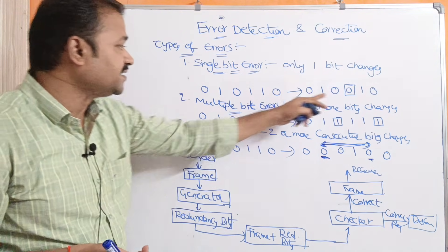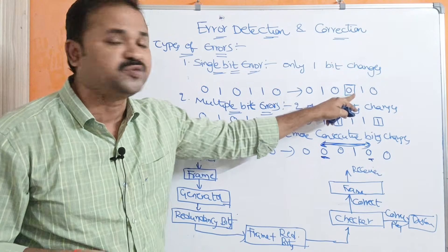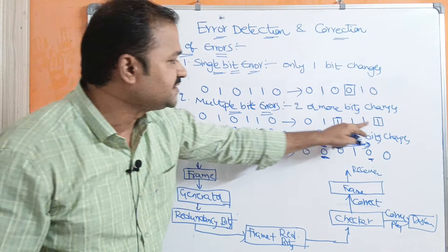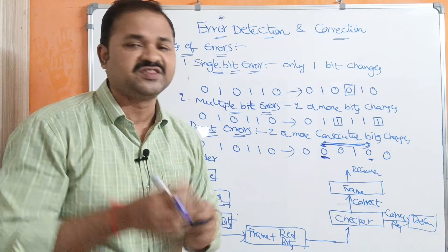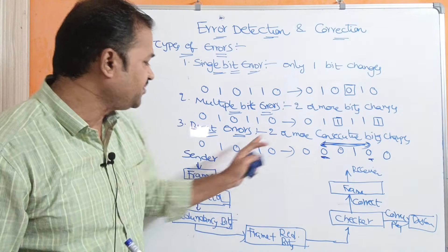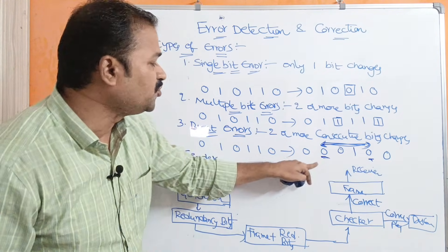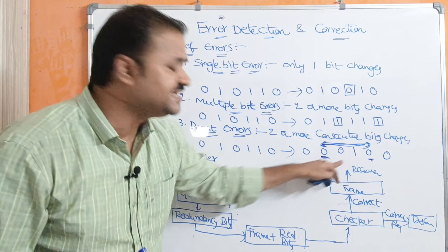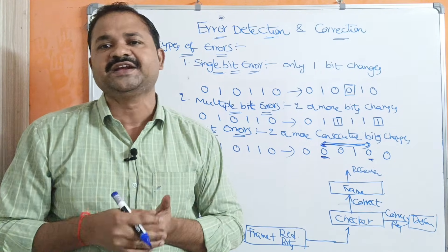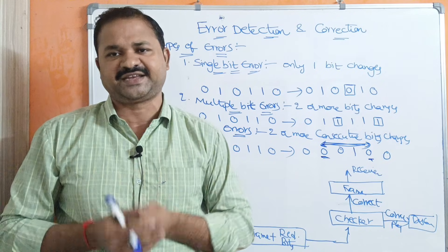For example, observing the single bit error example: in the 4th position we got the error. In the multiple bit error example: in the 3rd position and 7th position we got the error. In the burst error example, there are errors in multiple positions. So those bit positions will be identified as well as corrected.